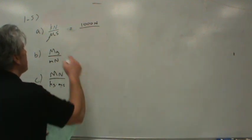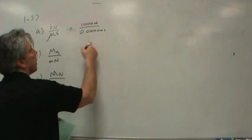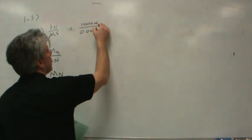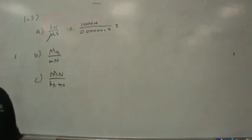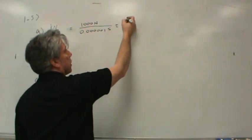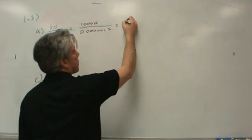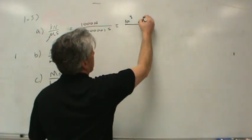So this is a millionth. Zero point zero zero zero zero zero one. One, two, three, four, five, six. Okay. That's microseconds. Now, another way to write this is with scientific notation. You guys know scientific notation? What is a thousand in scientific notation? One times ten to the third. Or just ten to the third, since one times is the same thing? Okay. So ten to the third newtons.